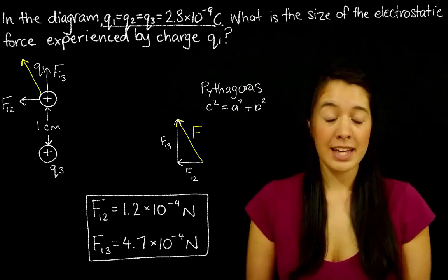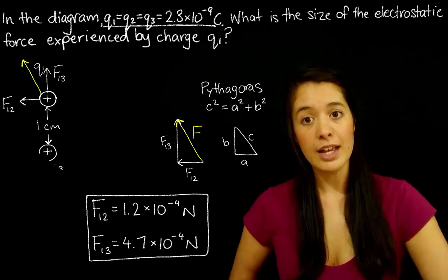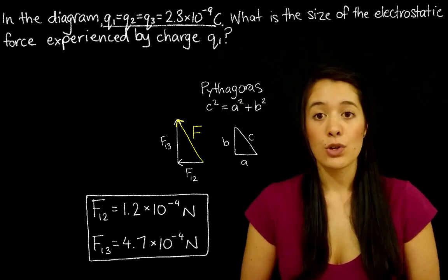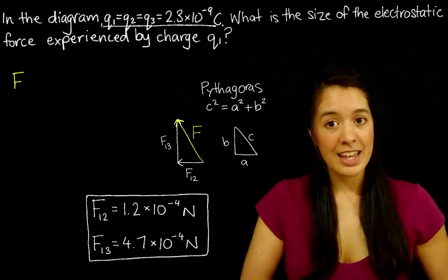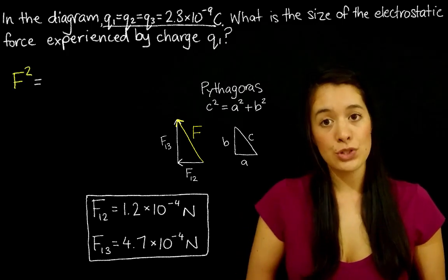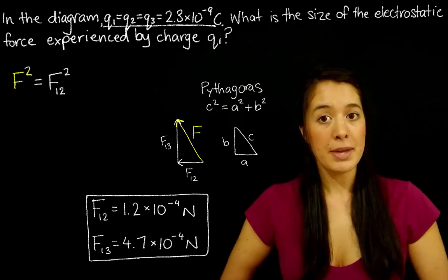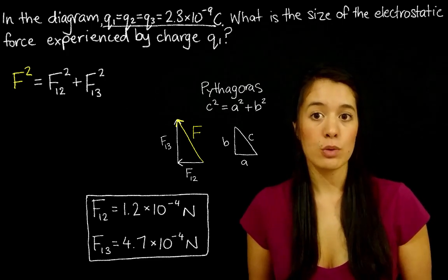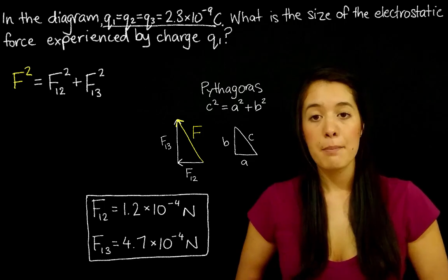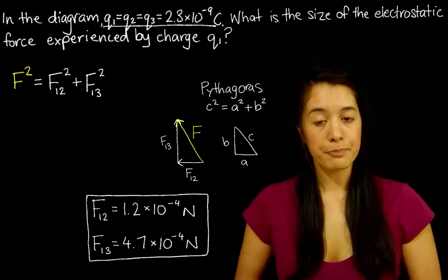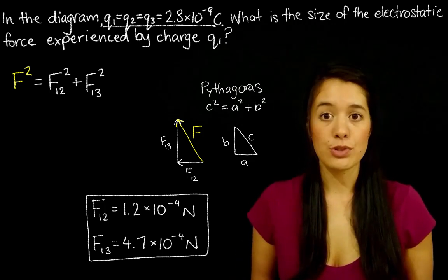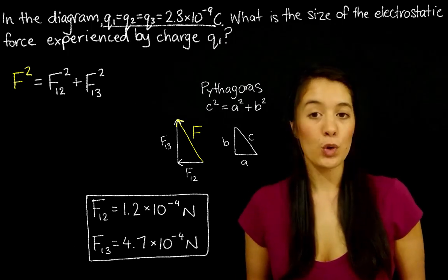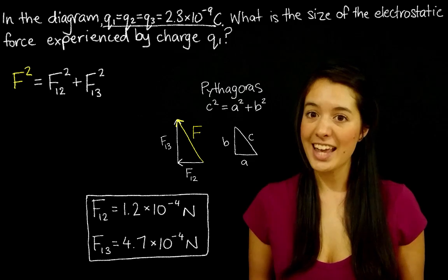So if we compare this triangle to a Pythagorean triangle, it becomes pretty clear where we make our substitutions. So the C becomes F, the A becomes F12, and B becomes F13. So that leaves us with F squared equals F12 squared plus F13 squared. And we already know the values to F12 and F13, right? We just worked it out. So now to find F, all we need to do is plug in the numbers and solve.